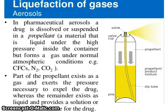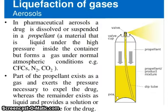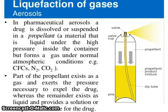In pharmaceutical aerosols, a drug is dissolved or suspended in a propellant — a material that is liquid under the high pressure inside the container but forms a gas under normal atmospheric conditions. Examples include chlorofluorocarbons, nitrogen, and carbon dioxide. Part of the propellant exists as a gas and exerts the pressure necessary to expel the drug, whereas the remainder exists as a liquid and provides a solution or suspension vehicle for the drug. The aerosol container has a valve, valve cup, propellant, propellant-product mixture, and a dip tube.